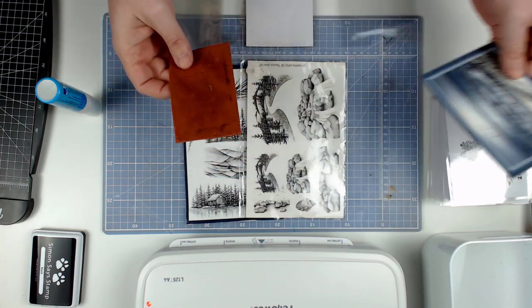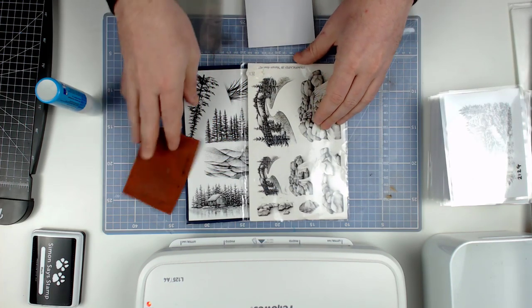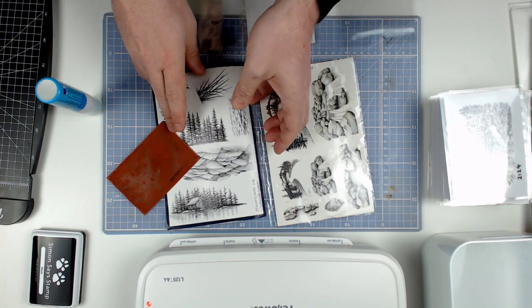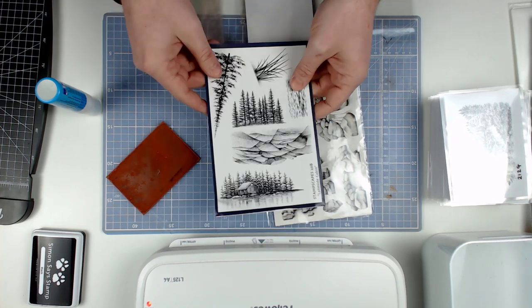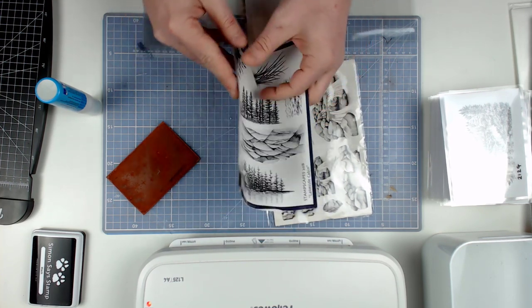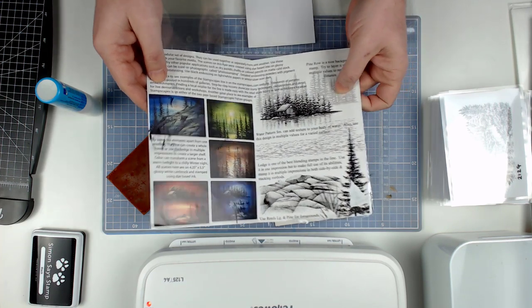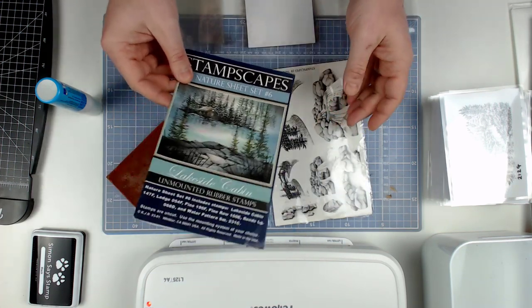One of the reasons was to get my craft room organized, and I have a lot of these unmounted rubber stamps from Stampscapes. They are beautiful stamps for making scenery images, as you can see in the leaflet that came with this sheet.